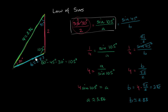So the key of the law of sines is if you have two angles and a side, you're able to figure out everything else about the triangle. Or if you actually had two sides and an angle, you would also be able to figure out everything else about the triangle.